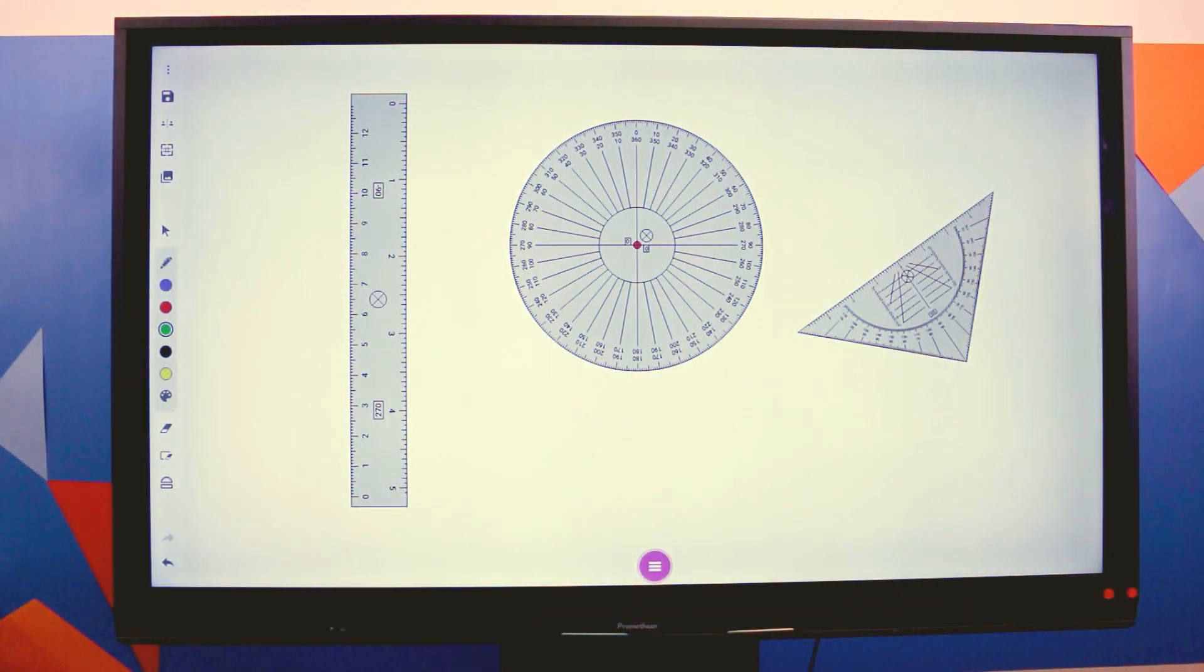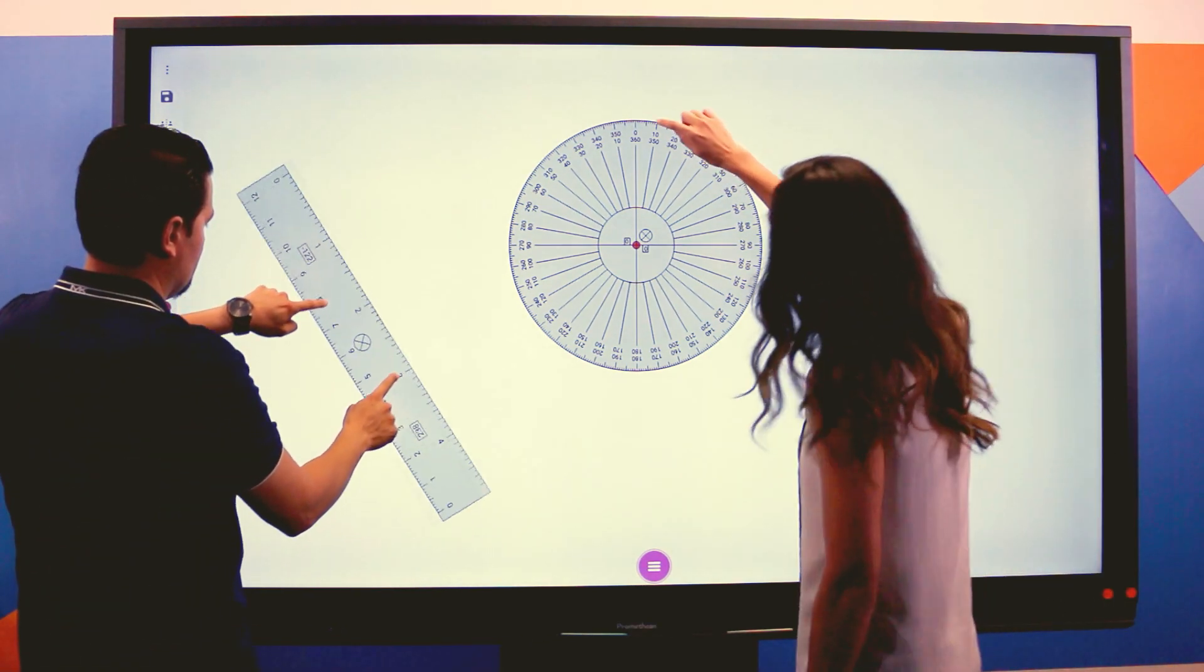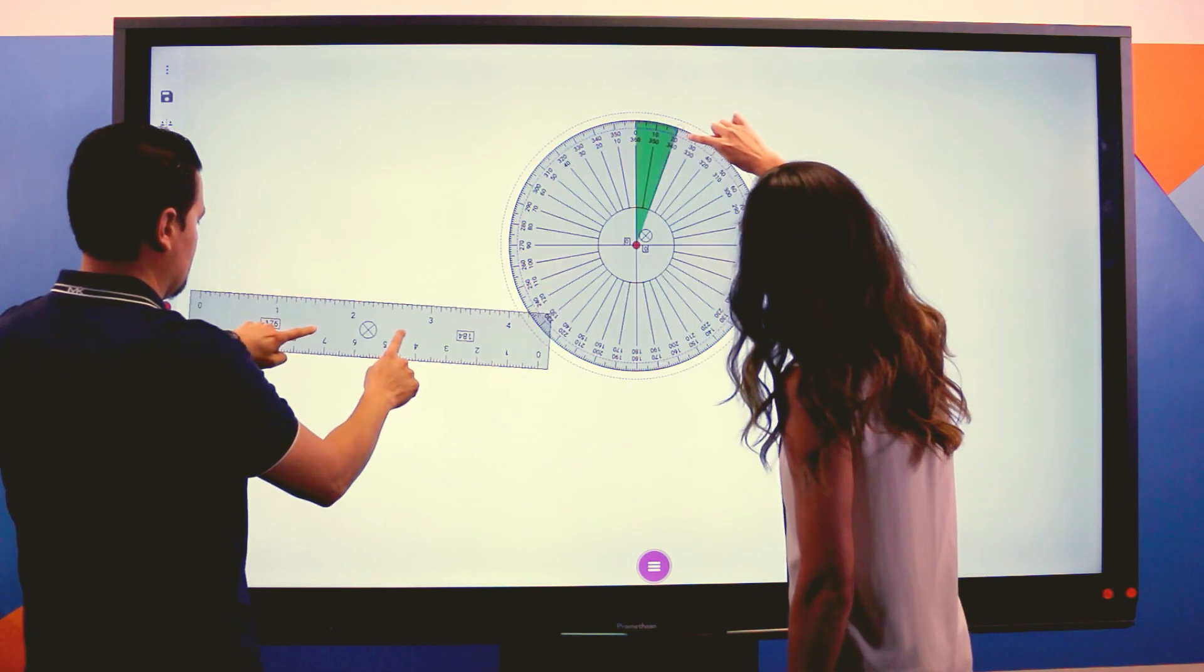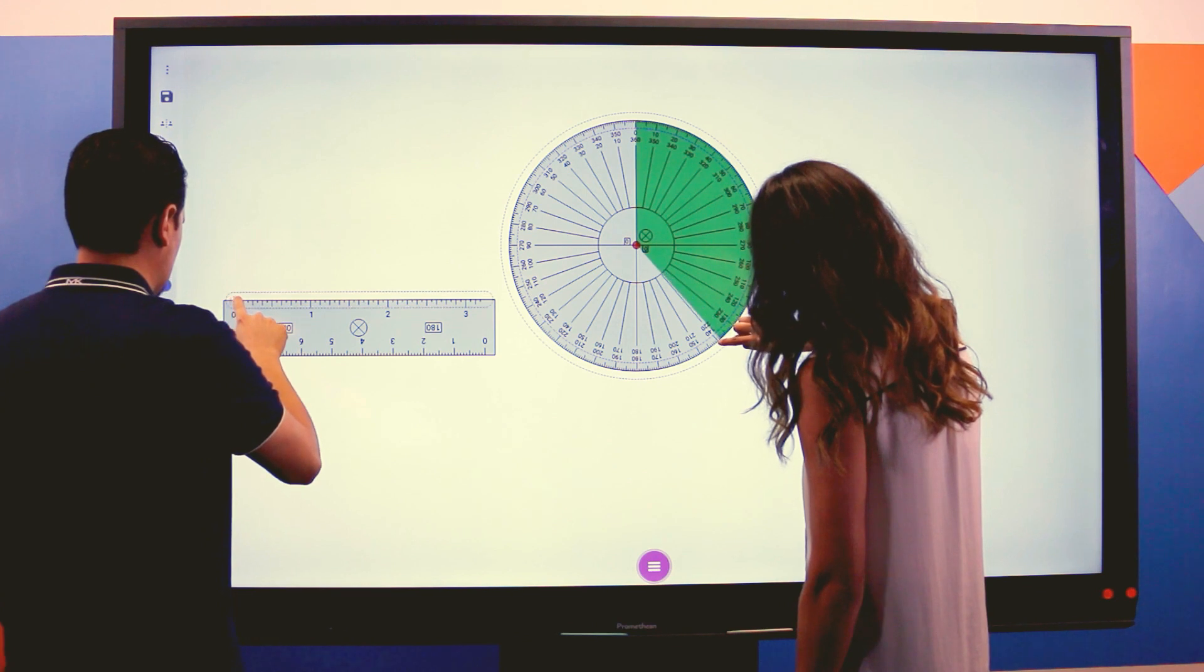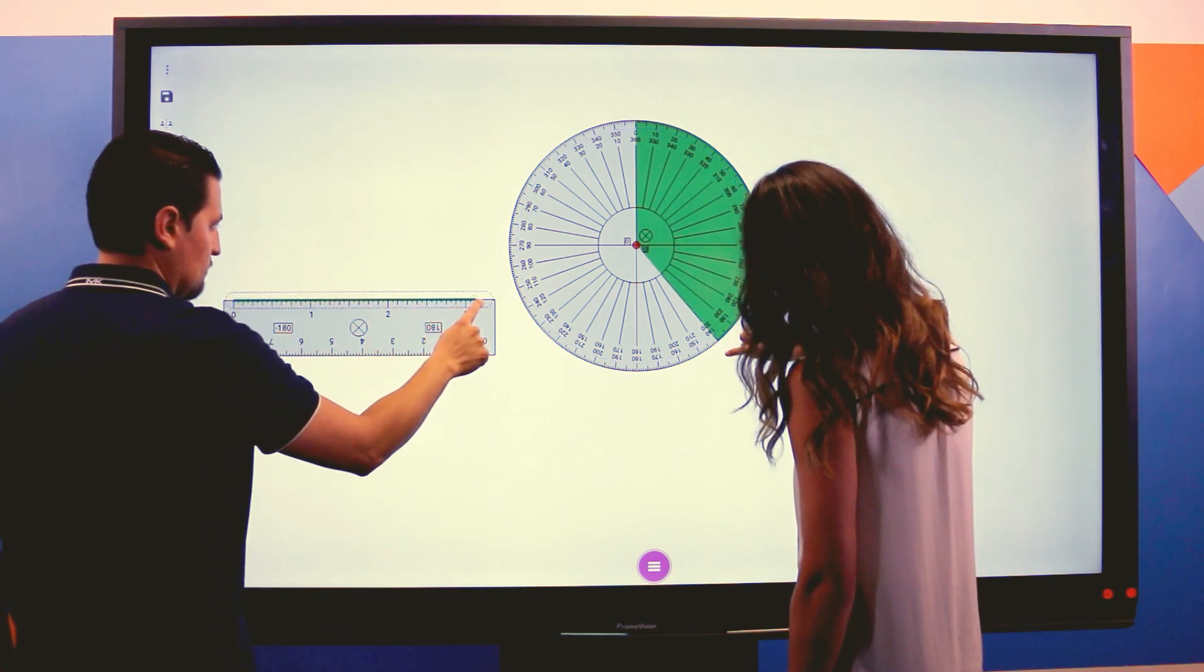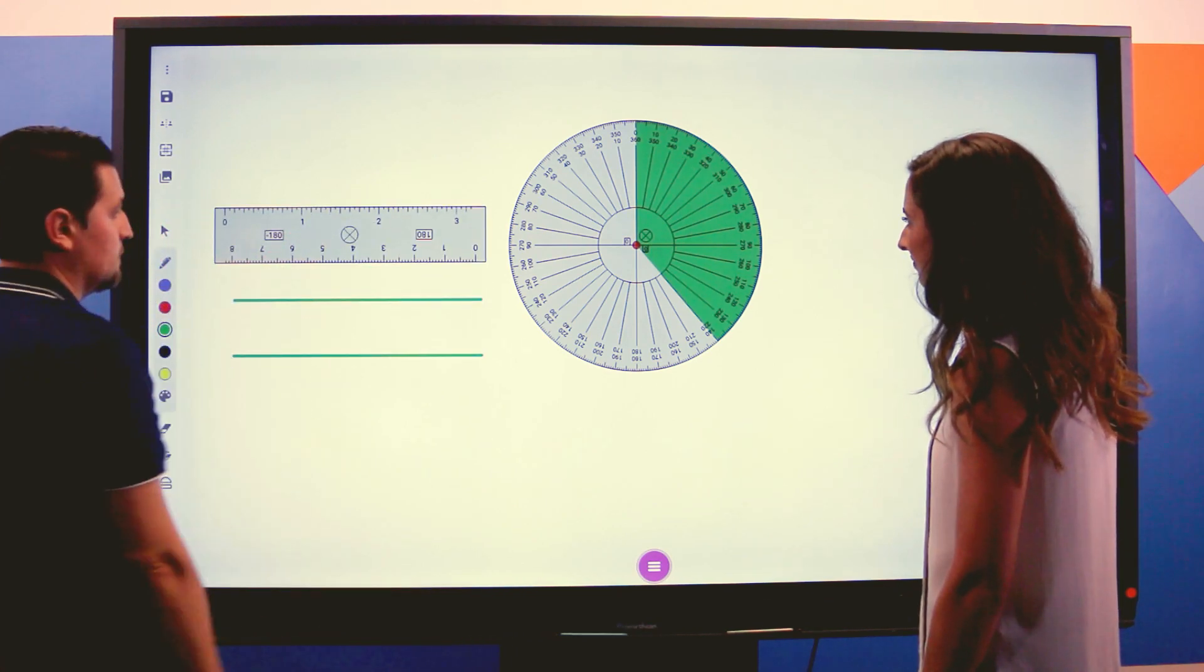All the tools behave similarly. You can move them around the canvas and tapping the X will remove them. To use the tool, draw near the edges. They can also be resized with the pinch and spread gesture. Let's take a look at them individually.